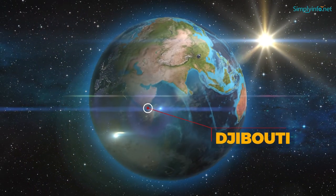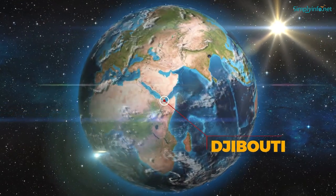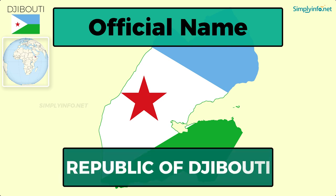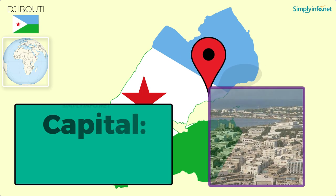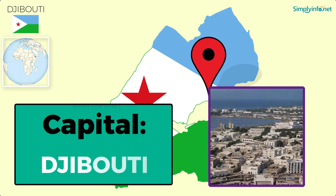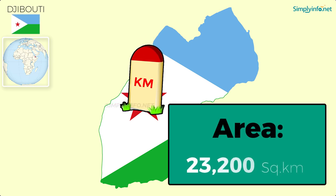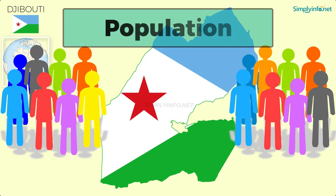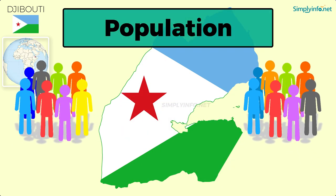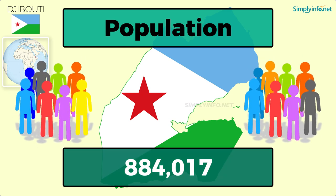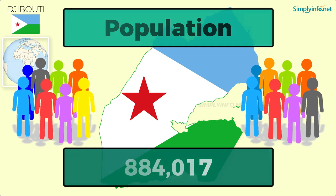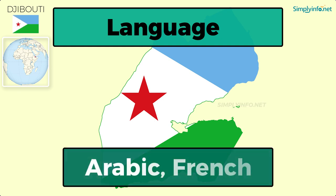Name: Djibouti. Official name: Republic of Djibouti. Capital: Djibouti. Area: 23,200 square kilometers. Population as of 2018: 884,017. Languages: Arabic and French.